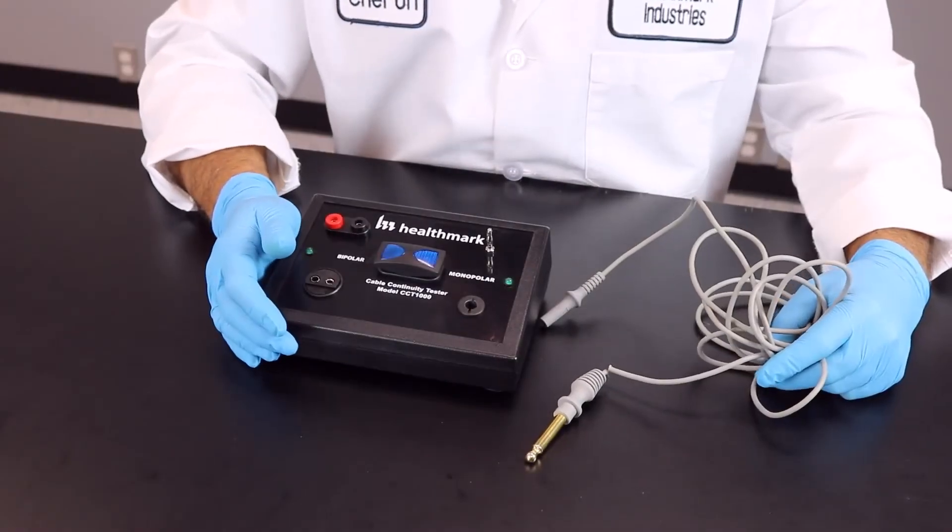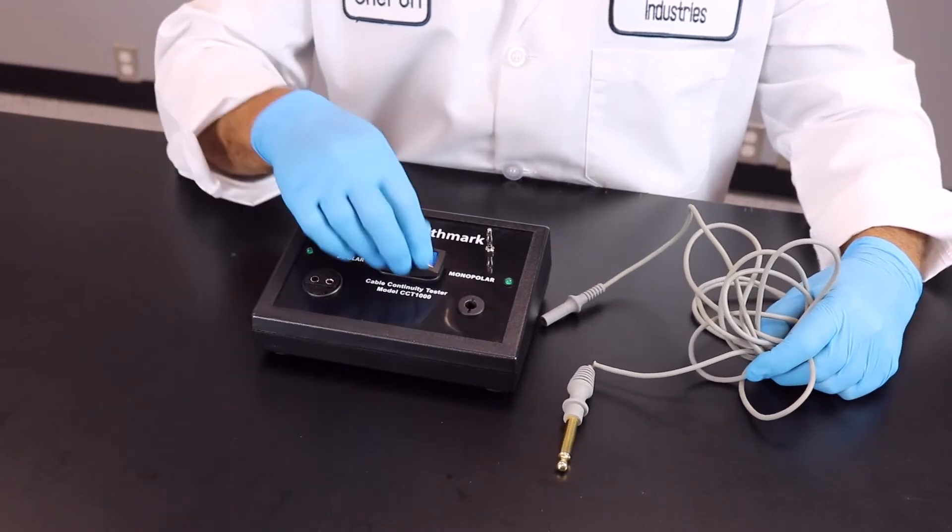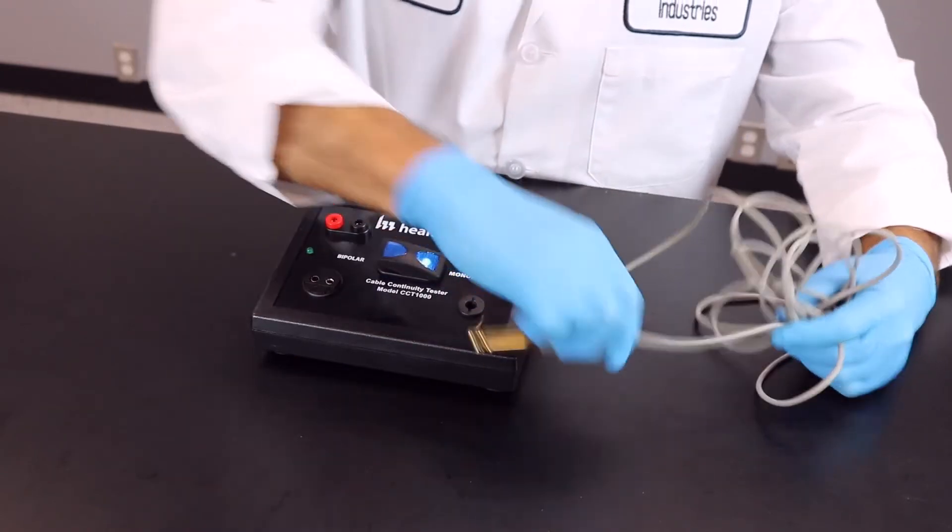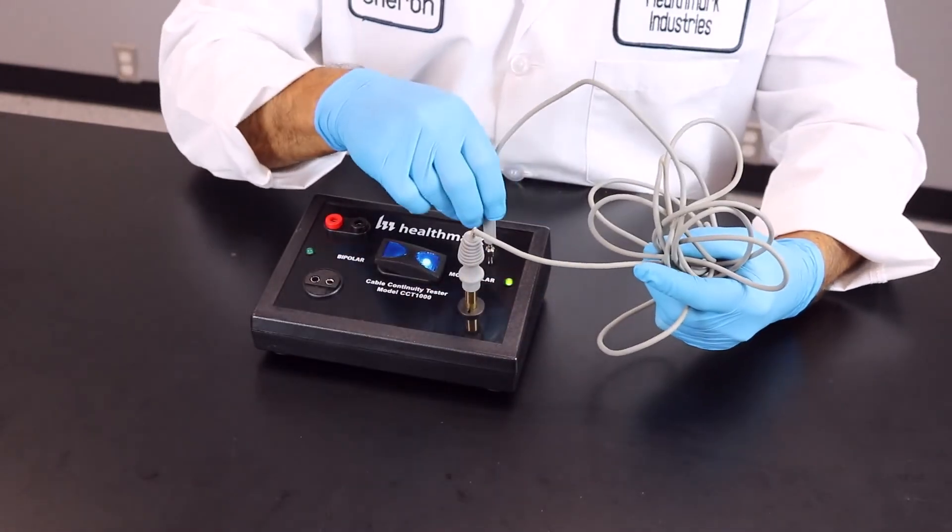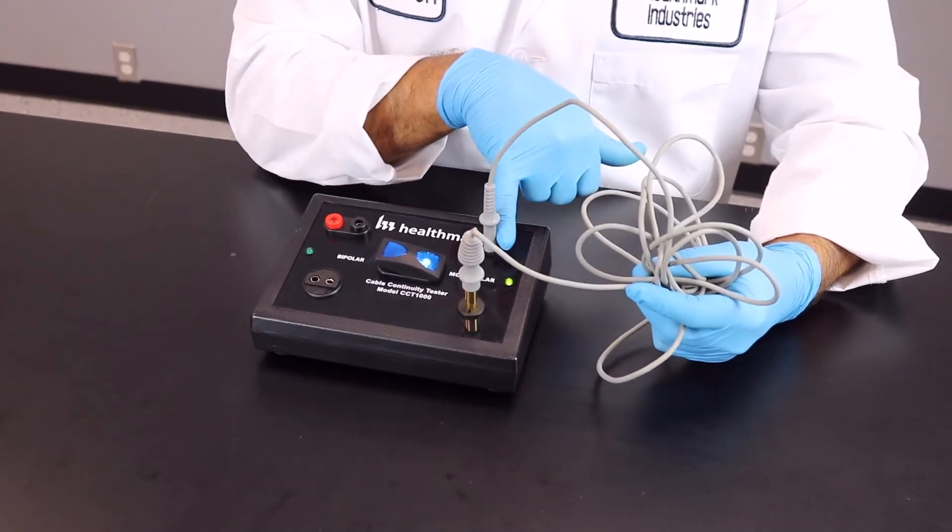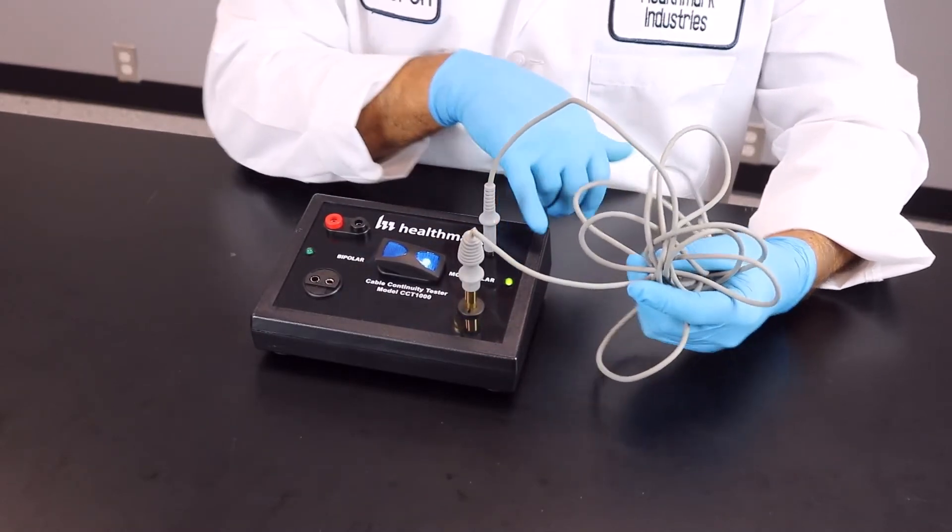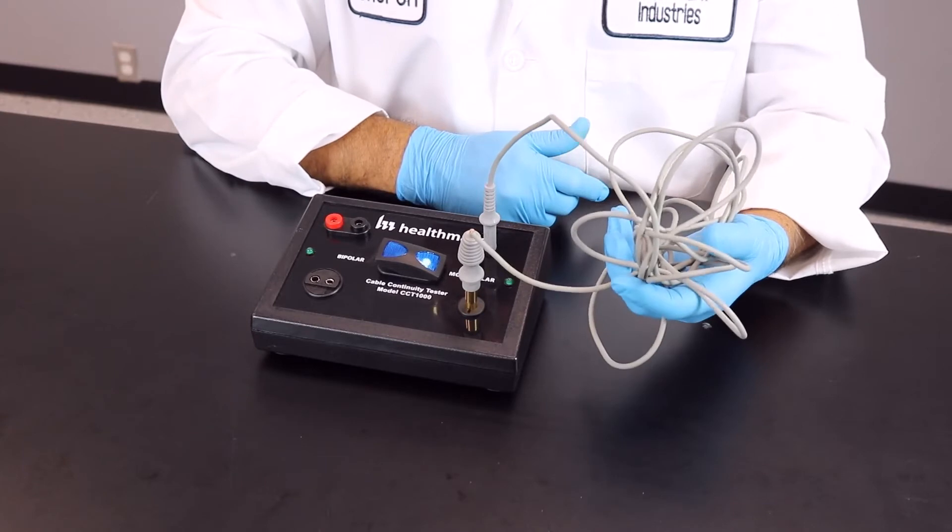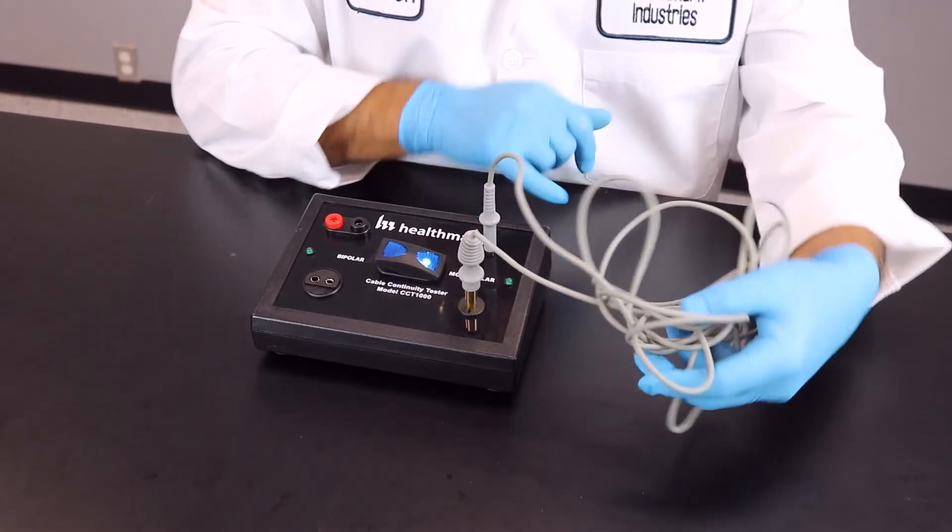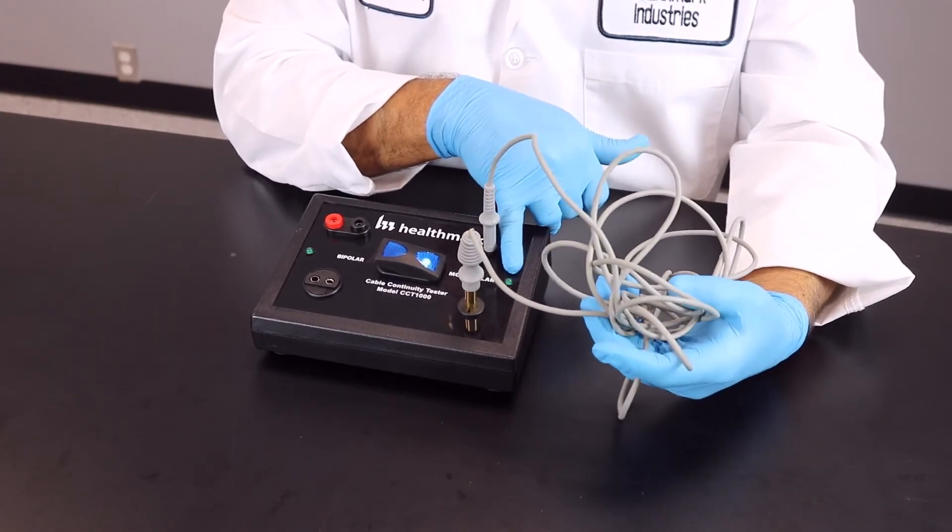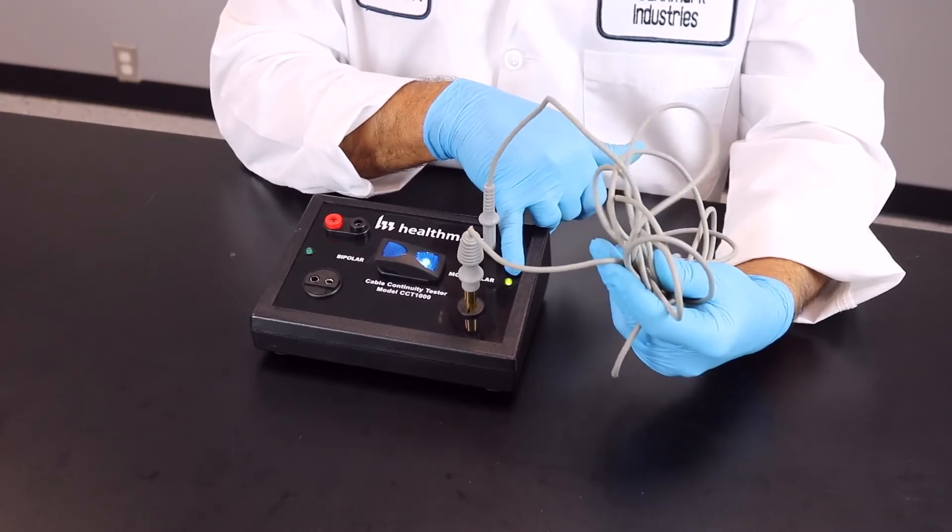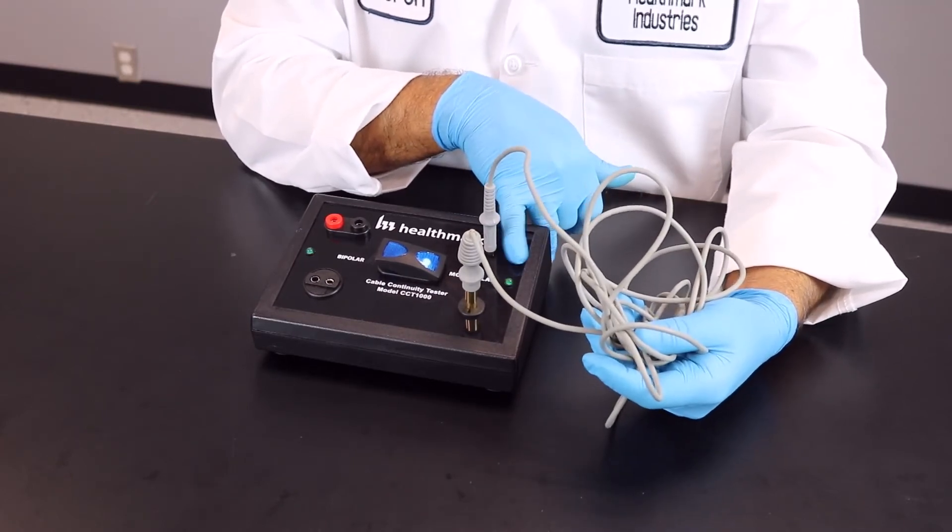So now we're going to show you a damaged cord that's going to fail. So we're going to insert the cable and you're going to notice the light goes on and it's flickering and I haven't even started playing with the cord yet. As you can see, I moved it around and the light doesn't go on. This is signifying that there is a break or almost a complete break within the cable and this is damaged.